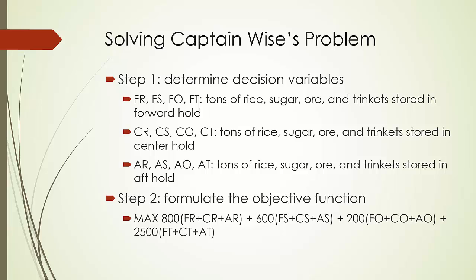After defining those 12 decision variables, it becomes easy to formulate the objective function. Captain Weiss would like to maximize total profit. For each ton of rice purchased, he makes a profit of $800. The total tons of rice bought is the sum of FR, CR, and AR — no matter how many tons of rice he purchases, it has to be loaded in one of the three cargo holds. Similarly, the sum of FS, CS, and AS is the total tons of sugar Captain Weiss is going to purchase.